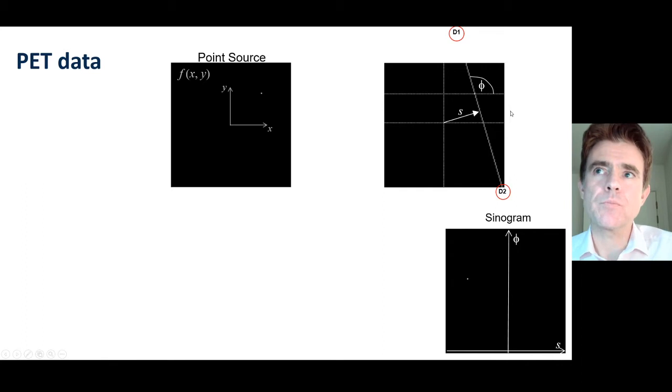We can characterize that line by S and phi. With the rotated system, the Y-axis was in that direction, so S is actually a negative value here. Here's the S-axis on the sinogram. We're plotting one count at that particular S and phi location. This is a 2D function. S and phi corresponds to a line through the scanner field of view.